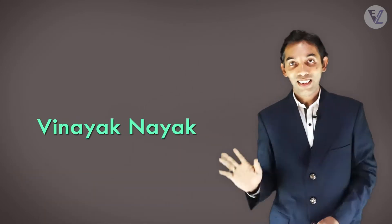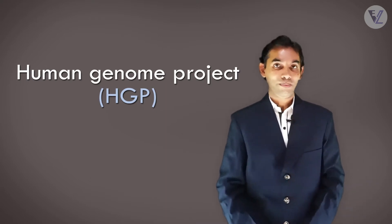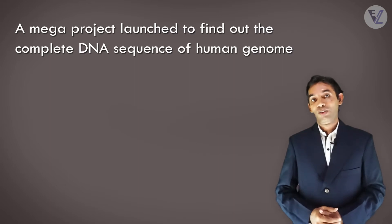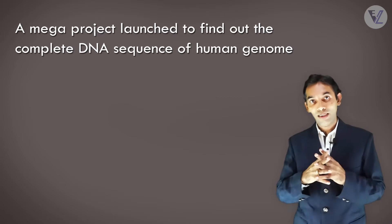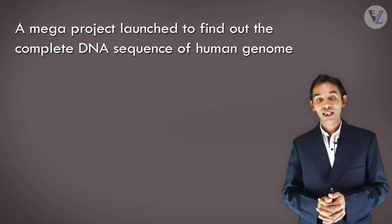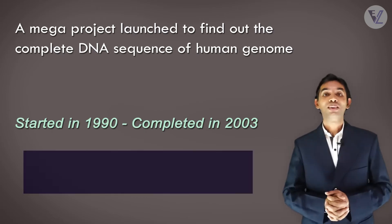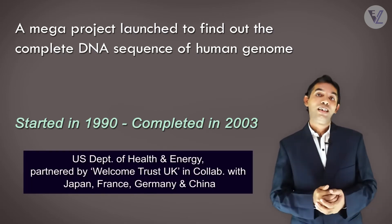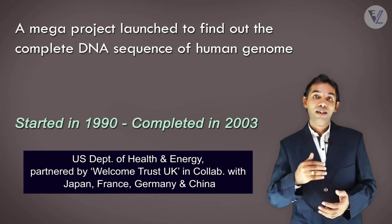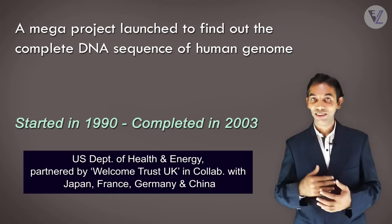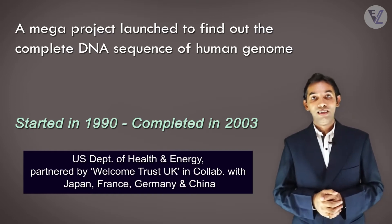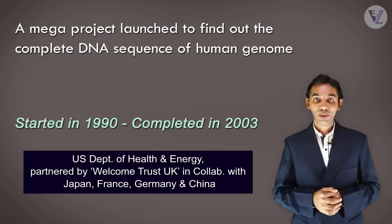Biology Made Easy. This is Vinayak Naik, and today we are going to discuss the Human Genome Project, or HGP. The HGP was launched to find out the complete DNA sequence of the whole human genome. This project was started in the year 1990 by the US Department of Health and Energy, partnered by Wellcome Trust United Kingdom, in collaboration with Japan, France, Germany, and China. The HGP was completed in the year 2003.